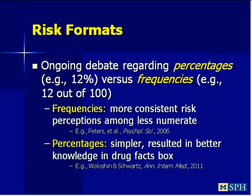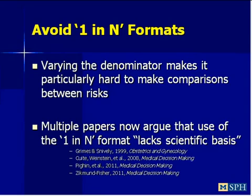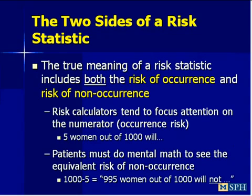There are some formats we do want to avoid. In particular, what others have called the one-in-N format—to say one in 250 or one in 375. When you vary the denominator in a ratio, it makes it very difficult for people to make comparisons between risks. Multiple papers based on clear experimental evidence show that presenting information in a one-in-N format results in considerably worse understanding and less ability to use that information than frequencies or percentages.